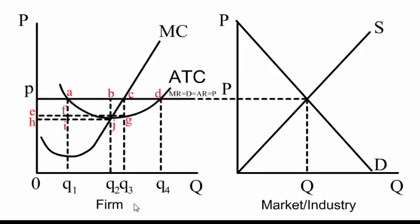Let's look at another graph — a graph of an individual firm earning economic profit greater than zero. The firm is productively efficient at point J, but it's allocatively efficient at point C and is going to produce Q3 units. So at the profit-maximizing quantity where the firm is earning an economic profit greater than zero, the firm is not productively efficient. Productive efficiency takes place at point G on the ATC.